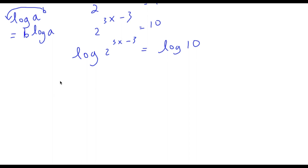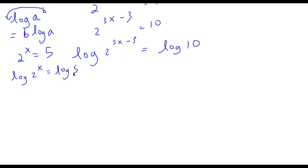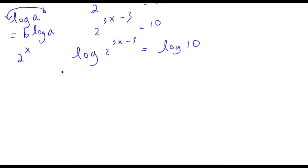This property is important because if x is an exponent, we can't solve the equation directly — we want x to be an actual term. So we use this log property to bring the exponent down.